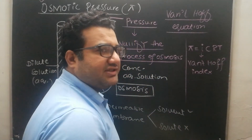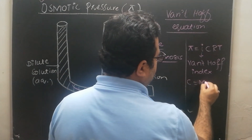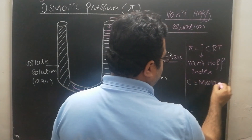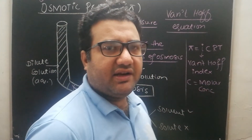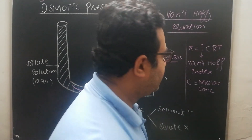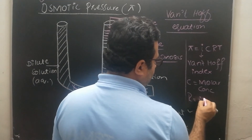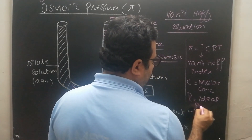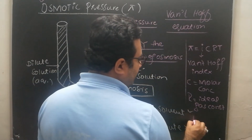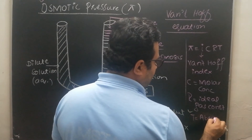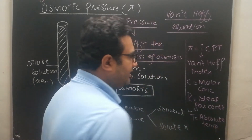The Van't Hoff index i is simply a constant — it is a dimensionless quantity. C is the molar concentration, meaning concentration in moles per liter or moles per decimeter cubed. R is the ideal gas constant, and T is the absolute temperature, meaning temperature on the Kelvin scale.